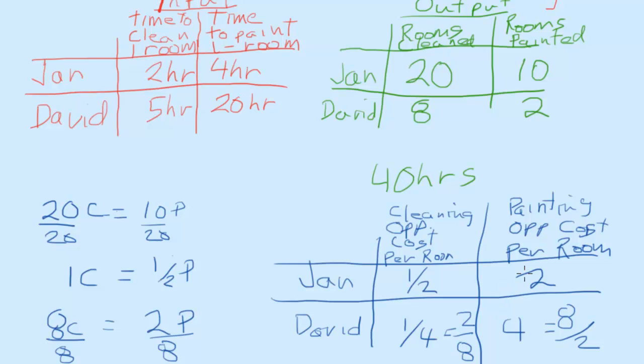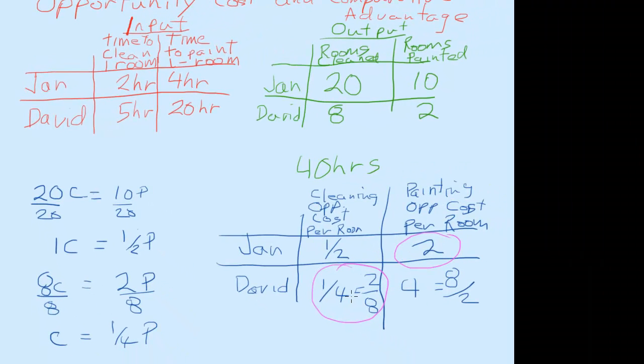So now if we're trying to calculate the opportunity cost, what I want to do is find the smallest number. Which one's the smallest, one half or one fourth? One fourth is smaller. Four or two? Two is smaller. Opportunity cost says specialize in what you do at the lowest opportunity cost. One fourth is less than one half. David should specialize in cleaning. And Jan should specialize in painting. So hopefully you enjoyed this.